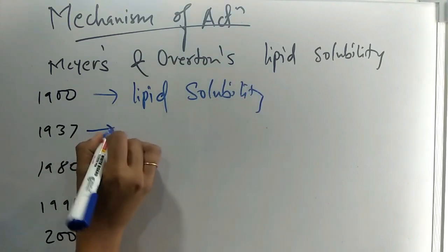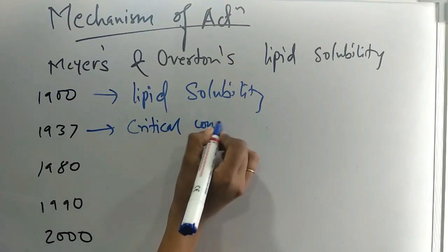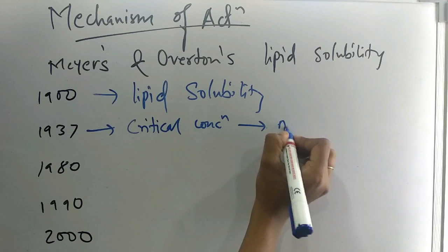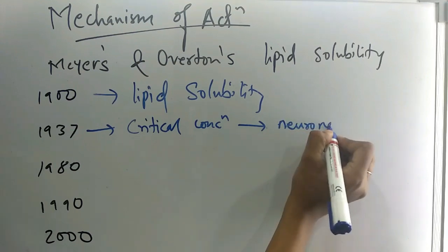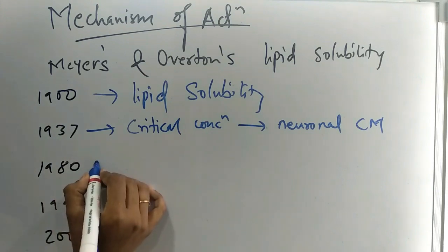In 1937, it was considered that when critical concentration is reached up to neuronal cell membrane, then the action is achieved. In 1980, the GABA-A receptor binds to benzodiazepines and barbiturates and then the action is achieved.